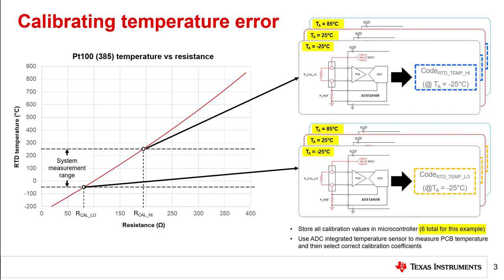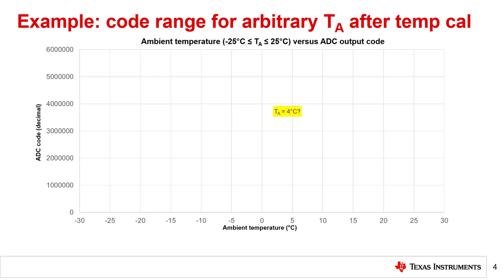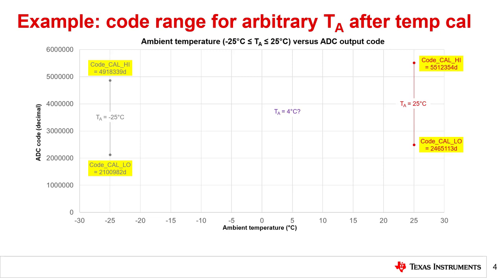Now, let's analyze how to use this information to calibrate out over-temperature error. First, let's assume we use the ADC's integrated temperature sensor to determine that the ambient temperature is 4 degrees Celsius. This value is shown in purple in the temperature versus ADC code plot shown on this slide. Since 4 degrees Celsius falls between the calibrated ambient temperatures of negative 25 degrees Celsius and 25 degrees Celsius from the previous slide, we need the calibrated ADC codes from these two temperatures. These are shown on the plot in gray and red respectively. Note that the values shown on the plot have been arbitrarily chosen for this example and do not necessarily correlate to any real system; these values would be measured and output by the ADC in a real system.